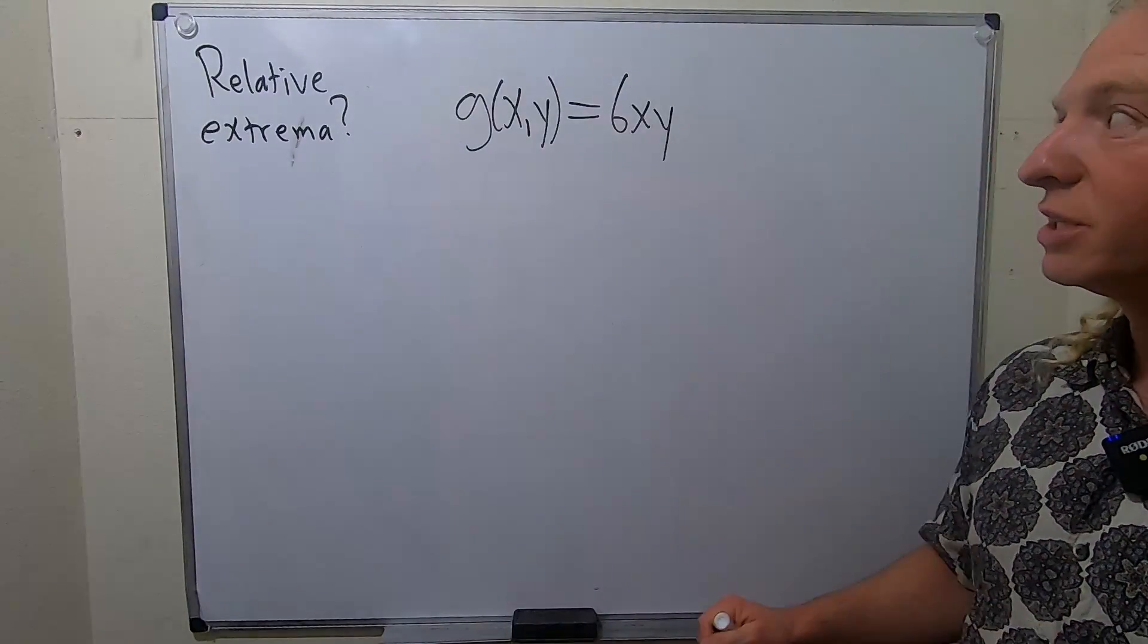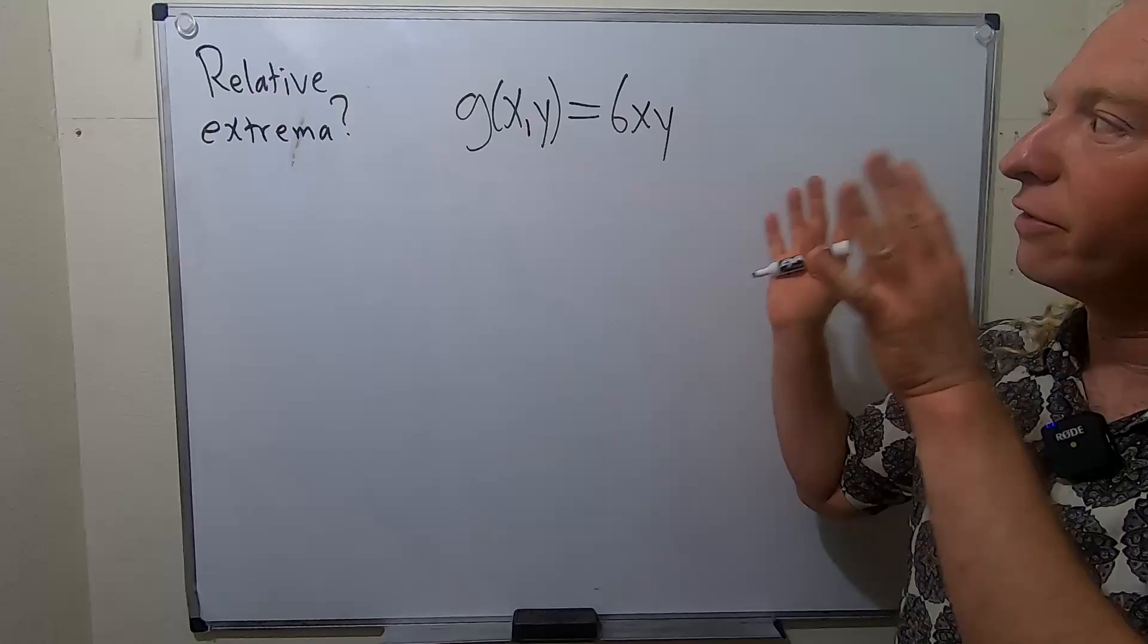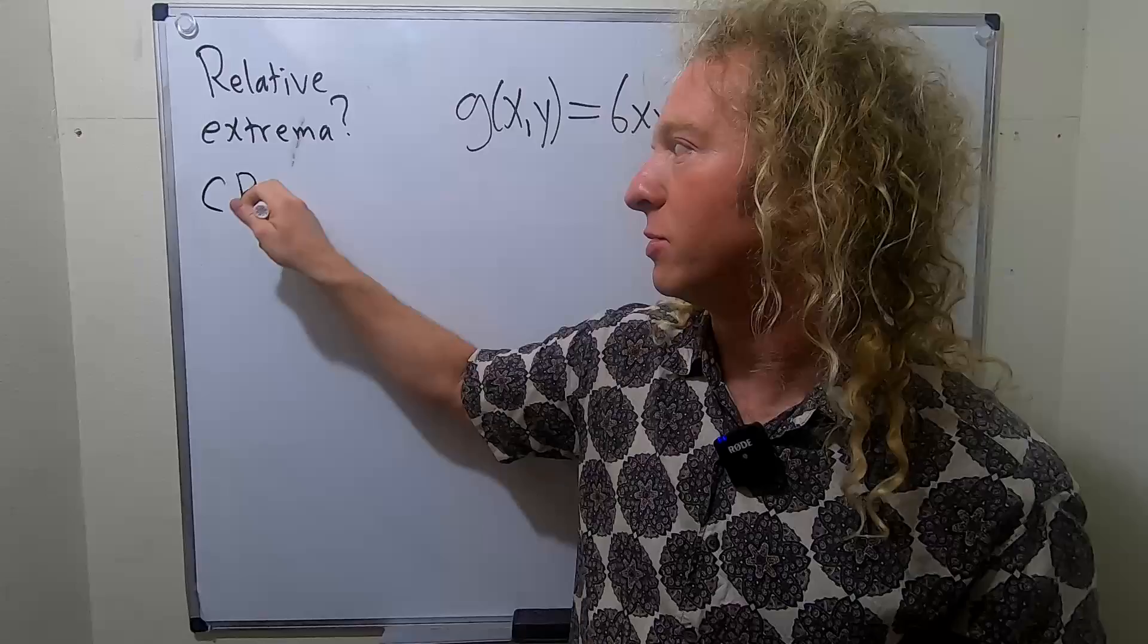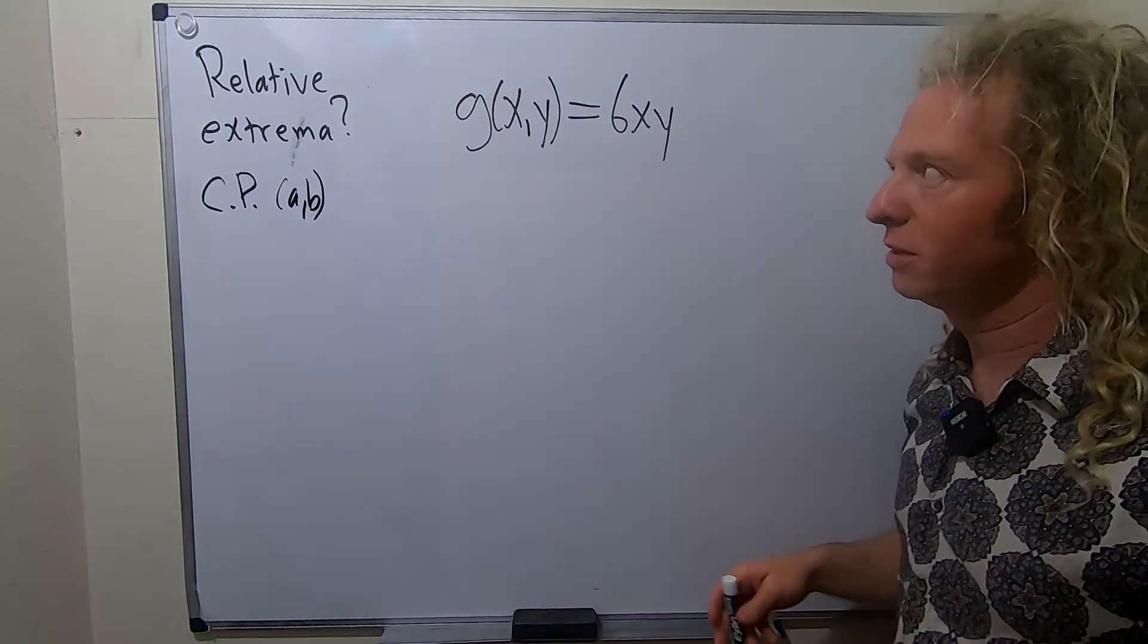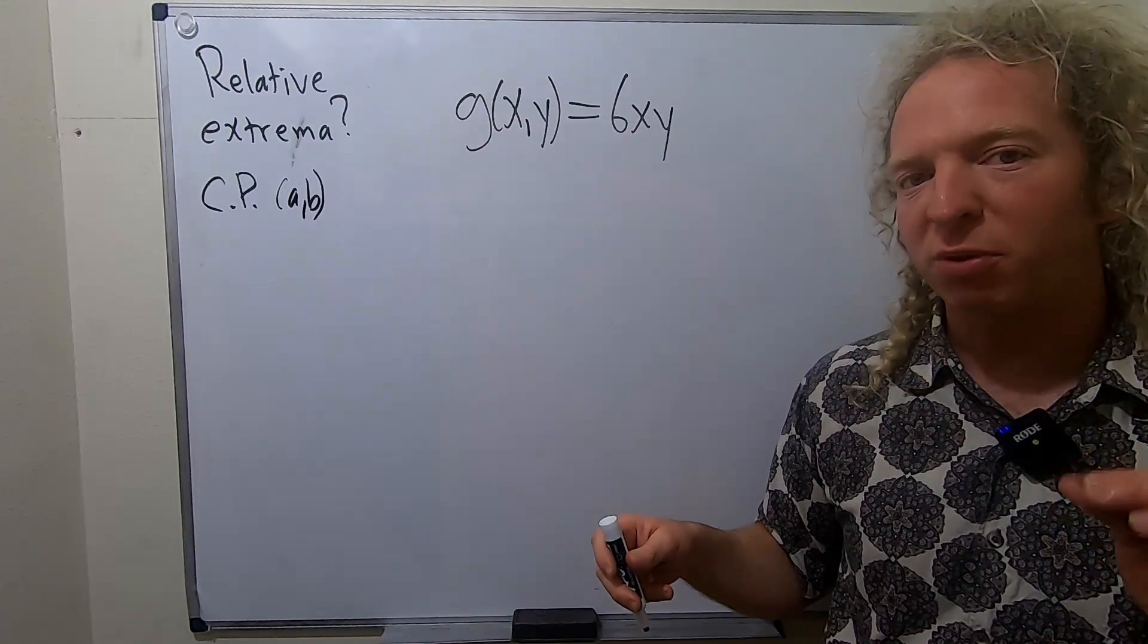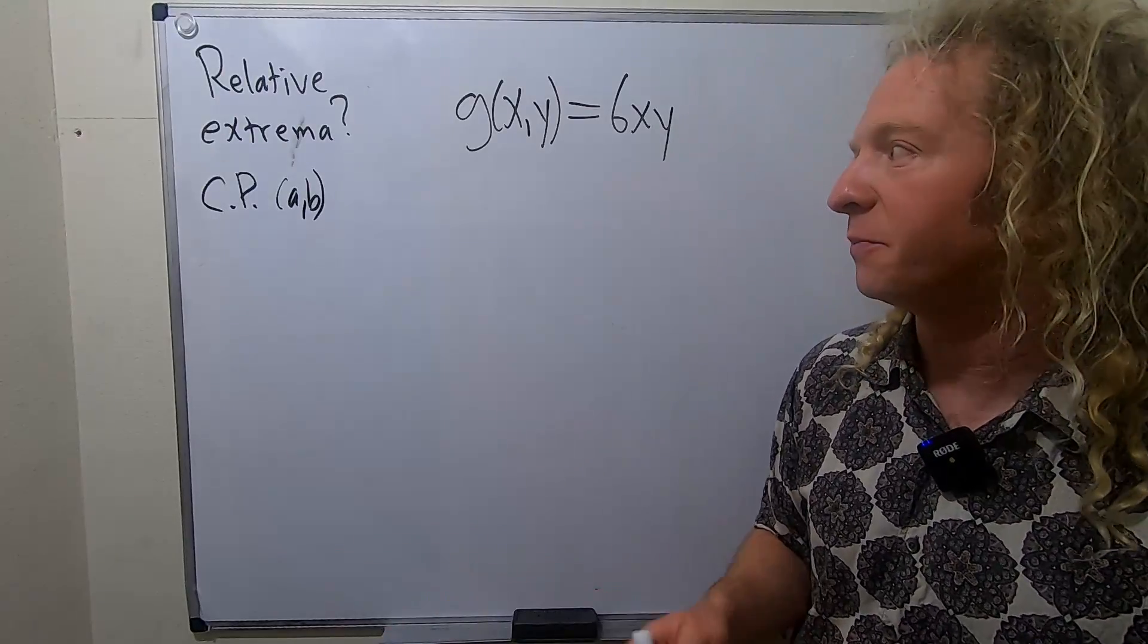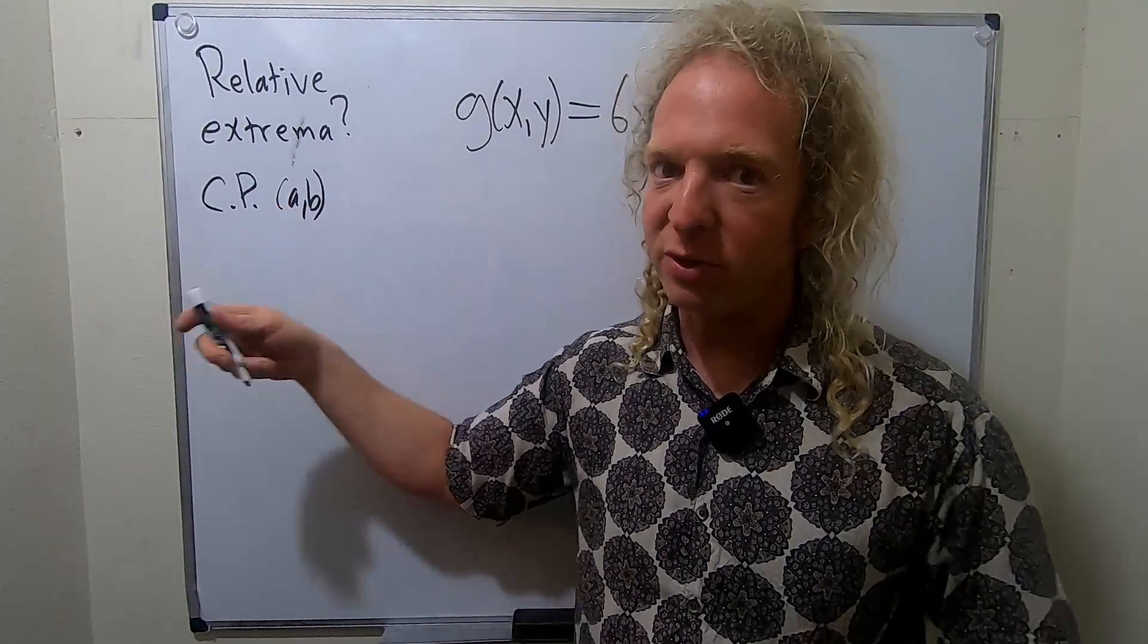In this video, we're going to use the second partials test to find all relative extrema of this function. So we're going to start off by finding a critical point. We need that before we use the second partials test. A critical point is a point in the domain of the function where either both first partials are equal to zero at the same time or one of the first partial derivatives is undefined. So to use the second partials test, you first find the critical points, which we'll do.